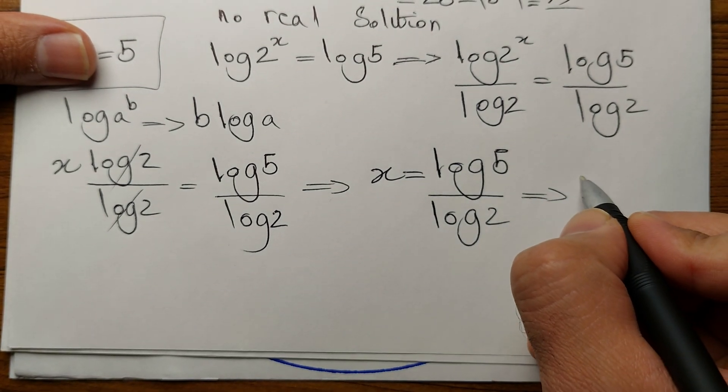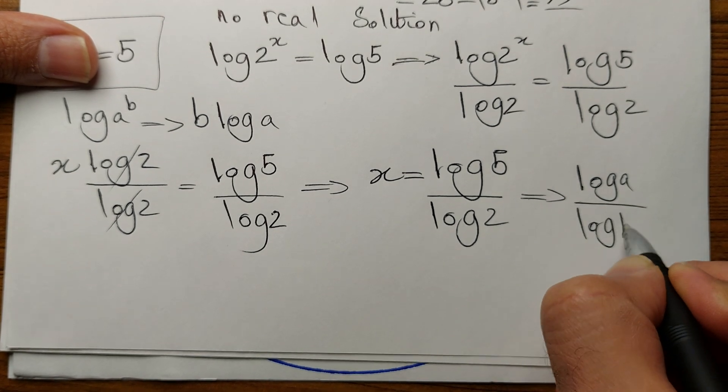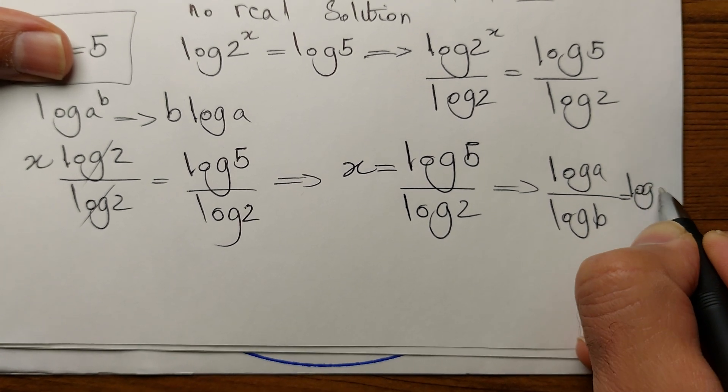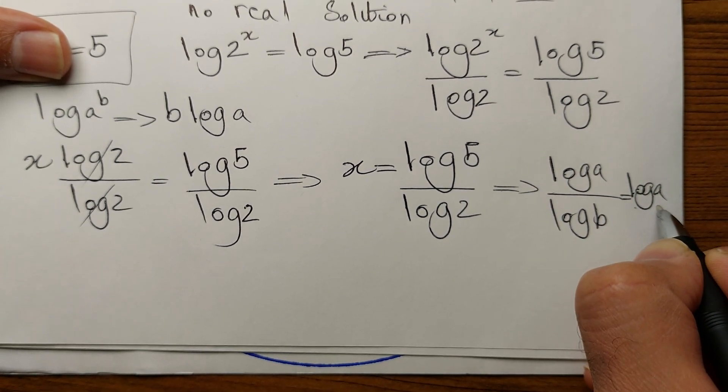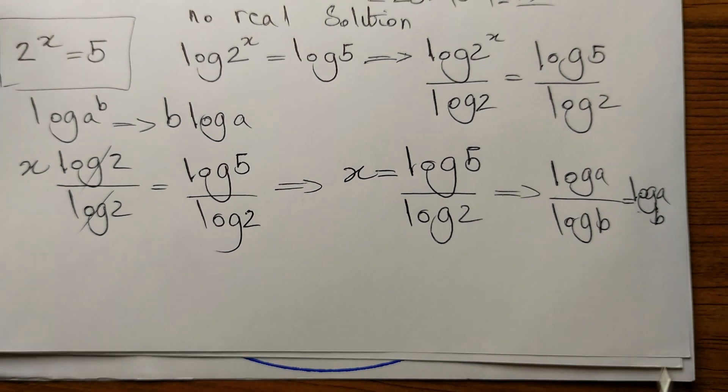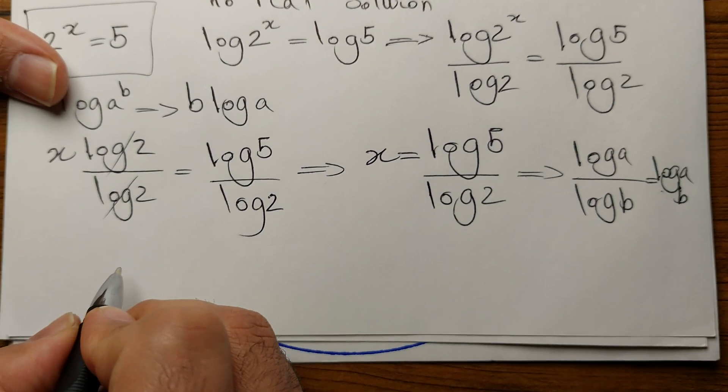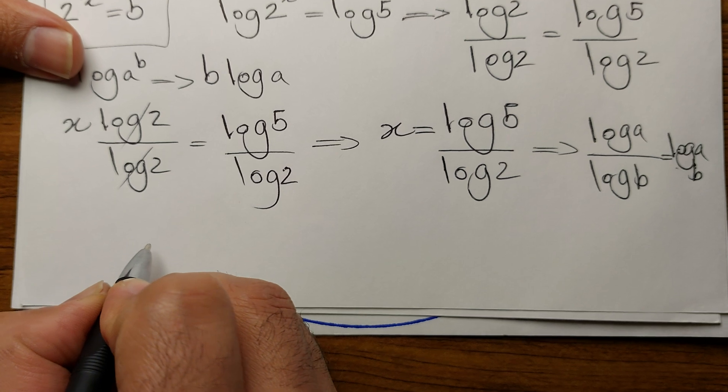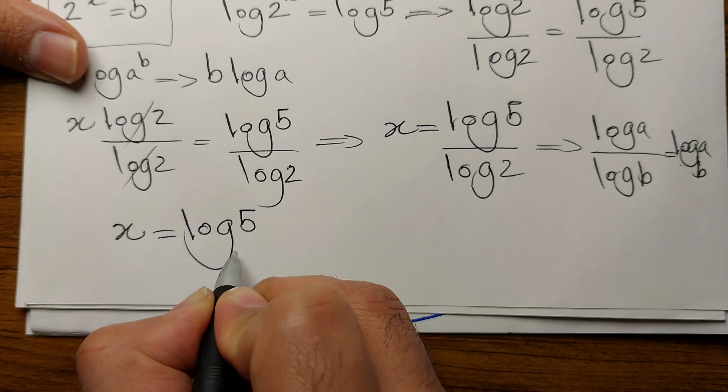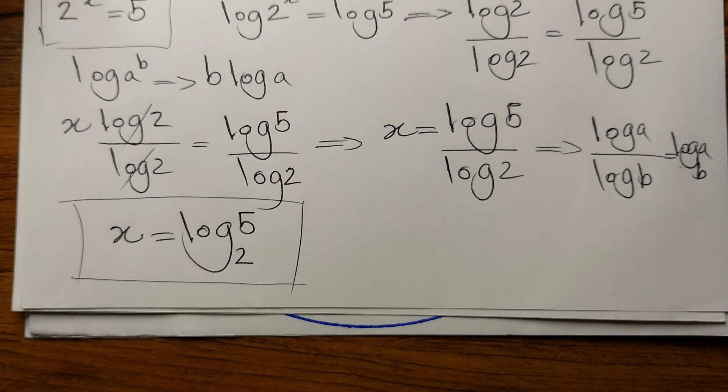Another important logarithmic relationship is, whenever we have log A over log B, we can rewrite it as log A to the base of B. So we need to rewrite it in this way one more time. x equals log 5 to the base of 2. And that's our answer.